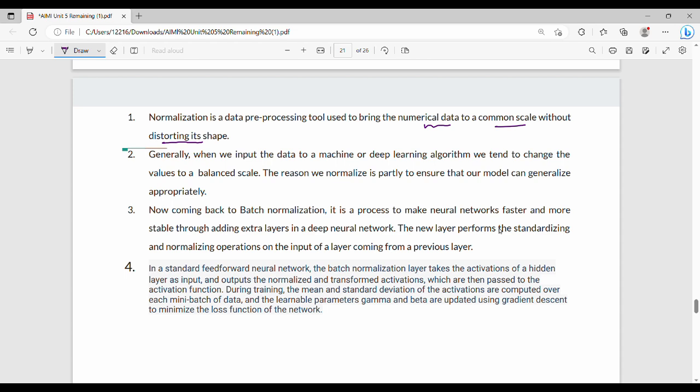Generally when we input data to a machine or deep learning algorithm, we change the values to a balanced scale so the model can generalize better. For example, suppose I am measuring age and weight of 100 students. If there are values like 25, 45, 55, and then by mistake a 155 entry, this is outlier data. The outlier data has significant impact on the model. If we normalize, the values are between 0 to 1.